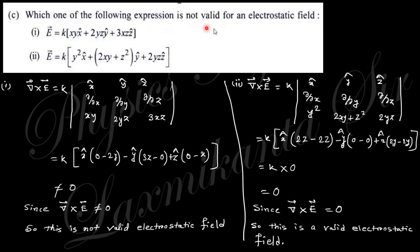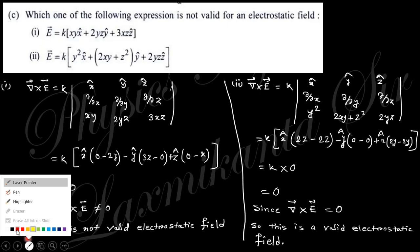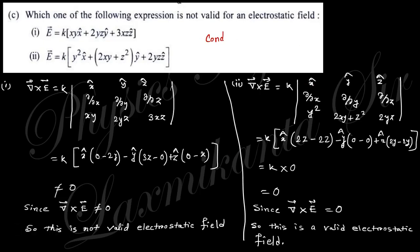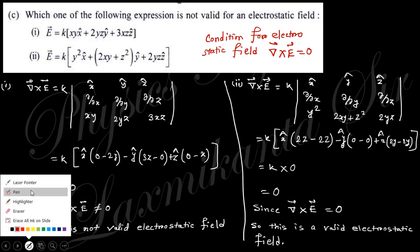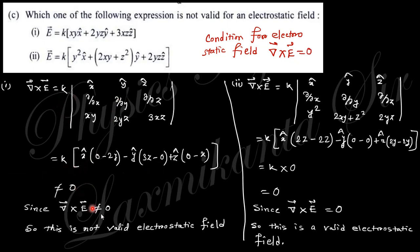The next question asks: which one of the following expressions is not valid for the electrostatic field? There are two expressions of E. The condition for an electrostatic field is that curl of E must equal zero. If you take the curl of the first expression, you will find it is not equal to zero, so this is not a valid electrostatic field.